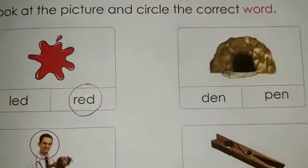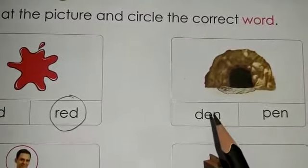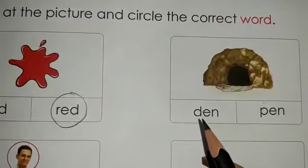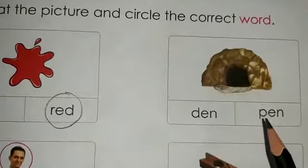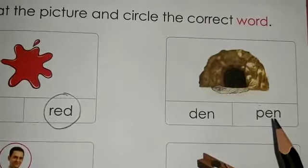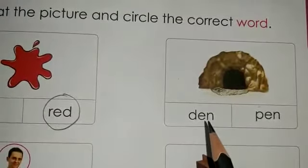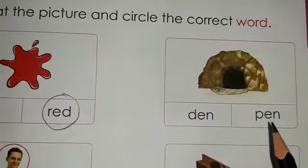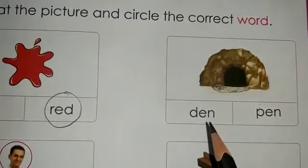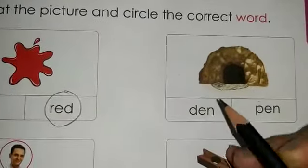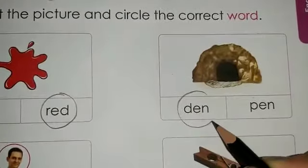Now come to the next picture. What do you see? Is this a den — D-E-N — or is this a pen — P-E-N? You have studied these words in E-N sound clusters. The answer is den, so we are going to encircle the word den.